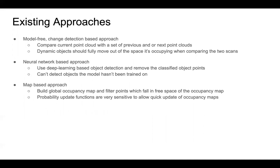Each of these categories has drawbacks for autonomous driving use cases. For example, the neural network-based approach is only capable of detecting the category of objects it was trained on, while the map-based approach is very sensitive and does not allow quick update of occupancy maps.